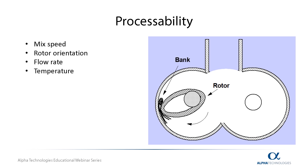Using information collected from a multi-speed Mooney viscometer about viscosity and scorch, it is then possible to begin to control the processability of the material. Knowing how long a material can cure and how rapidly it will, in conjunction with its viscous response to shear, it is then possible to set controls on operating parameters such as mix speed, rotor orientation, flow rate, and temperature. Control over these input variables ensures minimal energy consumption and maximum productivity with as little waste as possible.